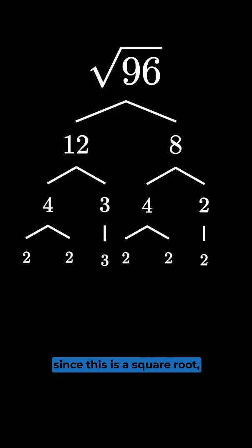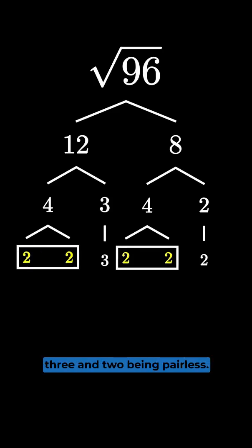Since this is a square root, we want to find pairs of the same numbers. So we have one pair of 2s here, and then another pair of 2s here. And then we're just left with 3 and 2 being pairless.